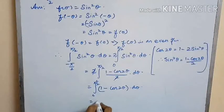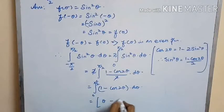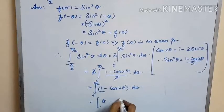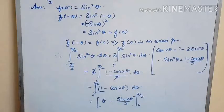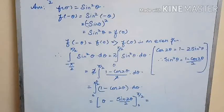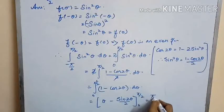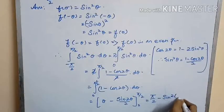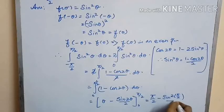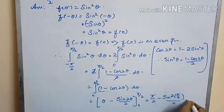Integrating (1 minus cos 2θ), we get θ minus sin(2θ)/2, evaluated within the limits 0 to π/2. Substituting the upper and lower limits, we get π/2 minus sin(2 times π/2) divided by 2, and the lower limit makes the function zero.